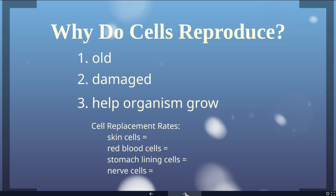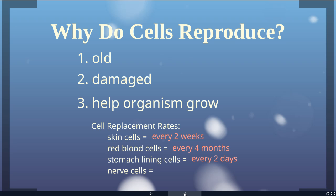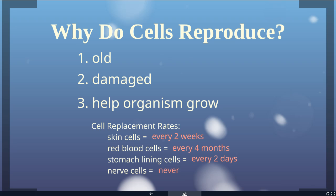Not all cells are going to reproduce at the same rate. Skin cells replace themselves every two weeks — we actually rely on a layer of dead skin cells on the outside of our skin as part of our immune response to protect internal tissues, and those cells slough off and need to be replaced every two weeks. Red blood cells live 80 to 120 days and are produced in the bone marrow every four months. Stomach lining cells replace themselves every two days because it's a highly acidic environment and individual cells just can't survive there very long.